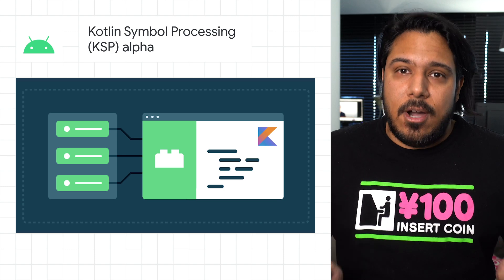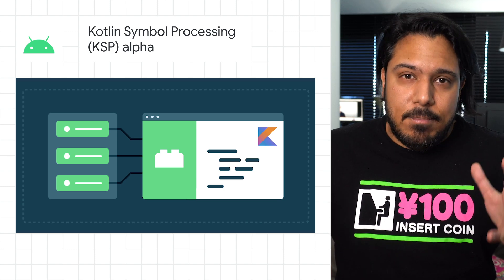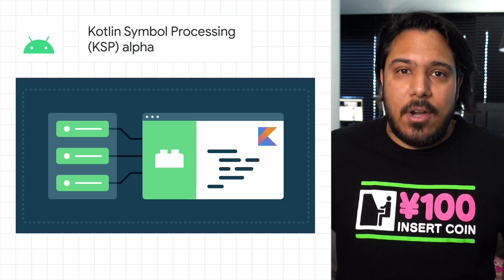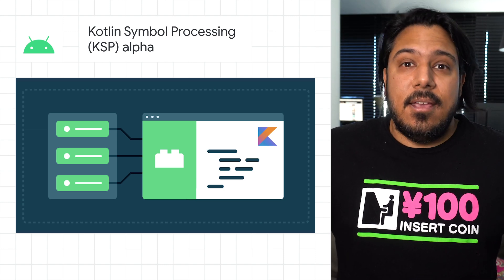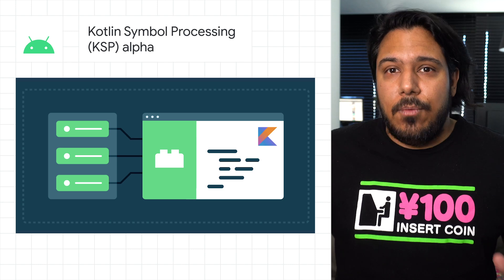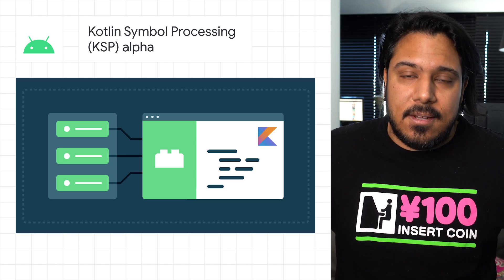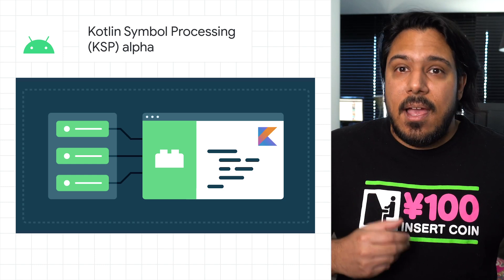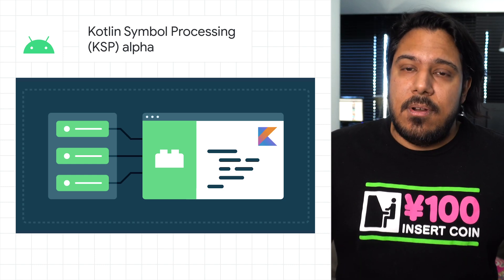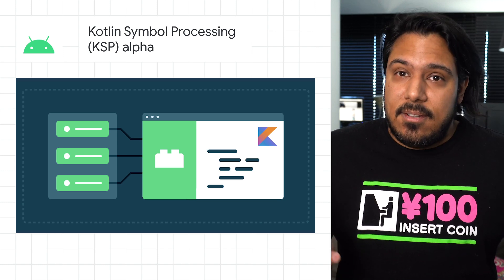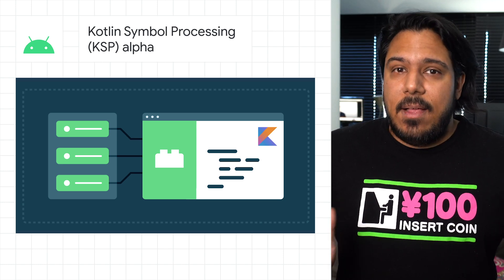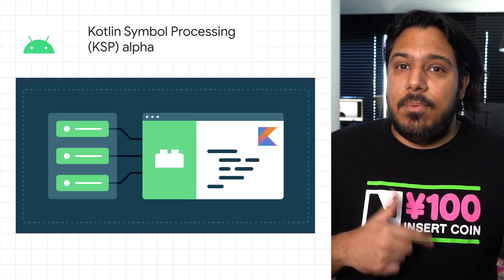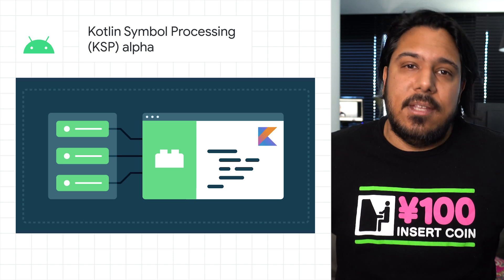The number one request we hear from Kotlin developers is to make builds faster, which is why we're excited to announce the alpha of Kotlin Symbol Processing. KSP is an all new tool for building lightweight compiler plugins in Kotlin. It offers similar functionality to Kapt, however it's up to two times faster, offers direct access to Kotlin compiler features, and is being developed with multi-platform compatibility in mind. Check out the post for links to a KSP playground project and everything else you need to get started.